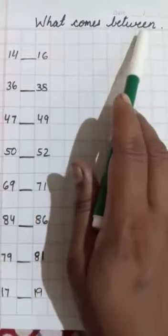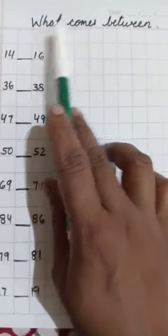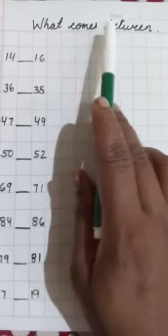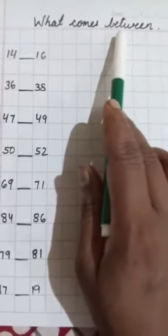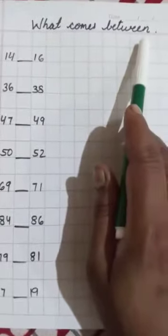What comes between? W-H-A-T, what? C-O-M-E-S, comes? B-E-T-W-E-E-N, between. What comes between?